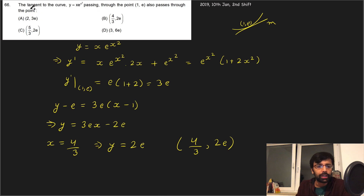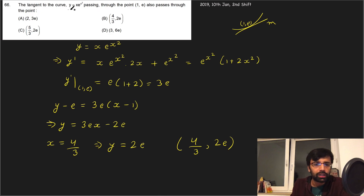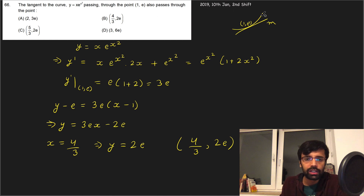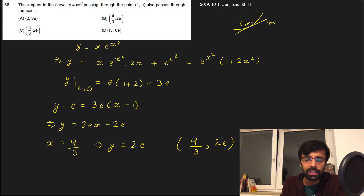First question: the tangent to the curve y = x·e^(x²) through the point (1, e) also passes through which point? This was asked in JEE Mains 2019, January 10th, 2nd shift. We are given the curve equation and need to find which of the four option points lies on the tangent passing through (1, e).